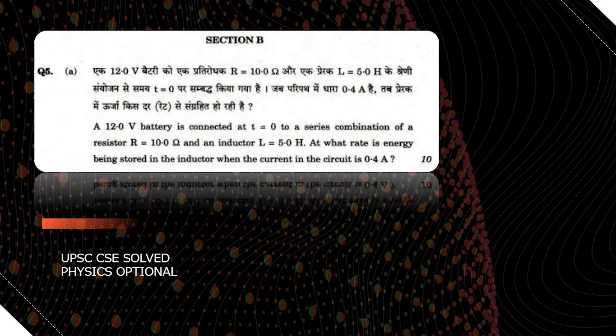A resistor, so it is a series combination of resistors, so basically it is an LR circuit, series LR circuit.